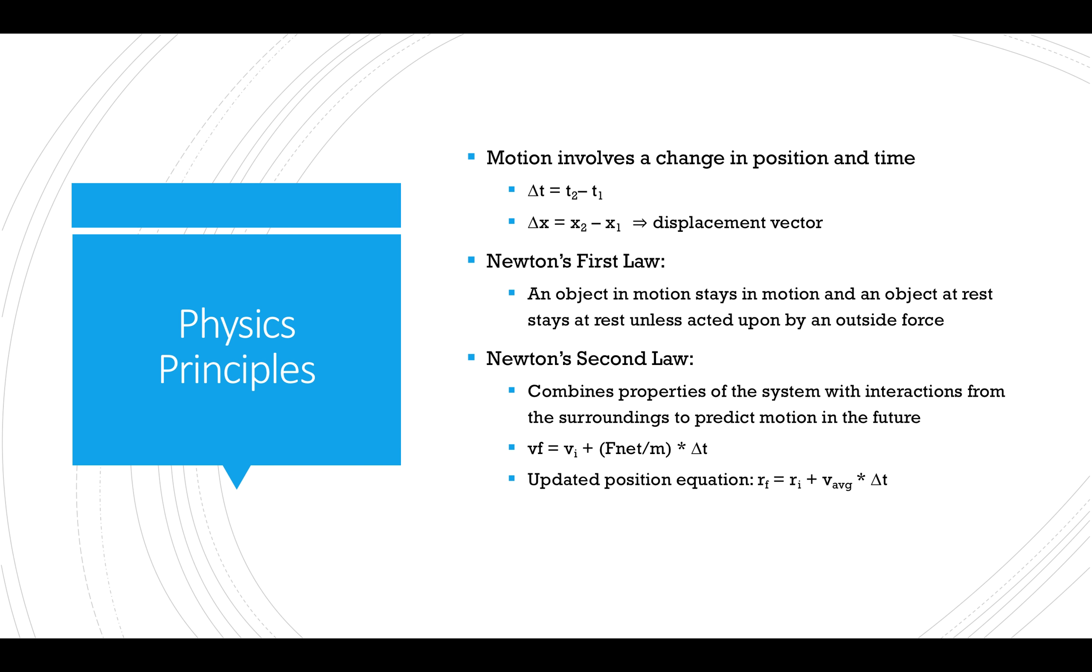The major principle involved in this lab is Newton's second law. Newton's second law is unique because it serves as a bridge to connect properties of the system to interactions with the surroundings. This allows us to predict motion and velocity in the future. The first equation below is derived from the momentum principle and predicts future velocity. The second equation is the position update equation and determines the future position of the object.